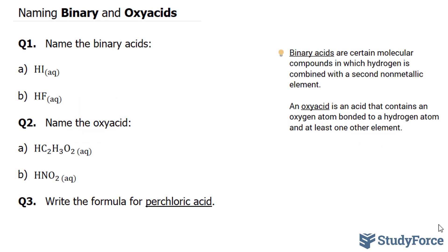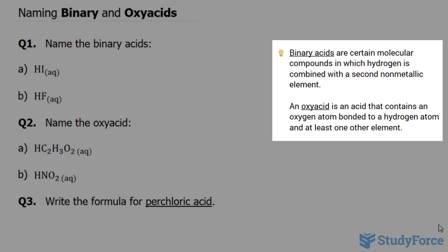In this lesson, I'll show you how to name binary and oxy acids. First, let's have a quick discussion on what these two words mean. Binary acids are certain molecular compounds in which hydrogen is combined with a second non-metallic element.